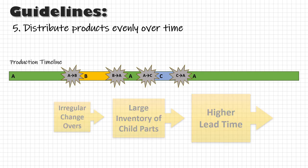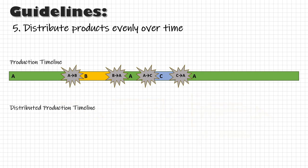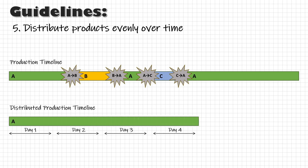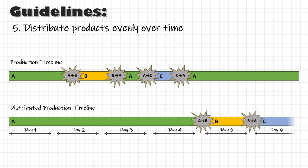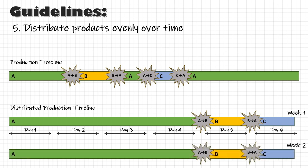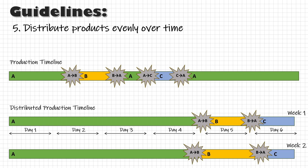What we want to do is decide the production sequence according to customer requirements. If the requirement for product A is four times that of B or C, then we produce A for the first four days, changeover to produce B on day five, then changeover to produce C on day six, and repeat this cycle. We can make minor adjustments per customer need, but now we can plan child parts based on a standard production cycle.